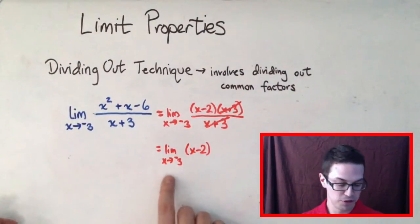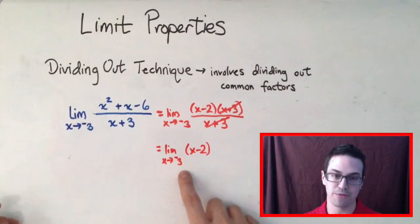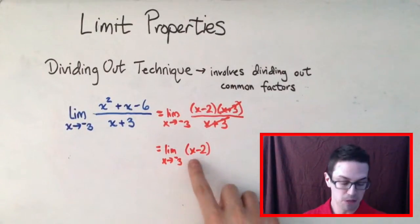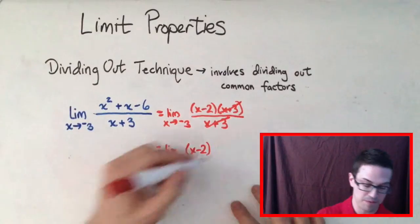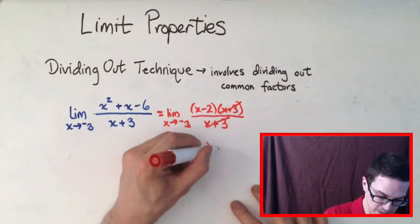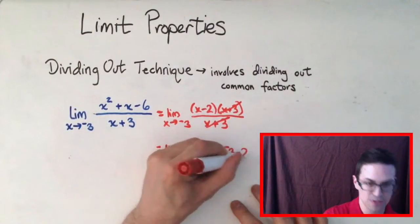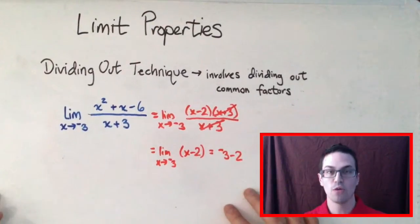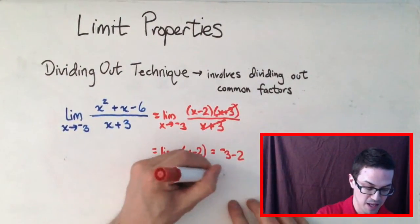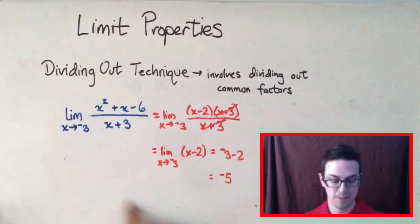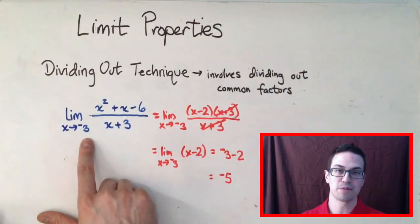You should notice that x minus two is continuous everywhere, including at negative three. So all we have to do is plug in negative three into this function to find the limit. We get negative three minus two, and negative three minus two is negative five. That ends up being the limit of this function as x gets closer to negative three.